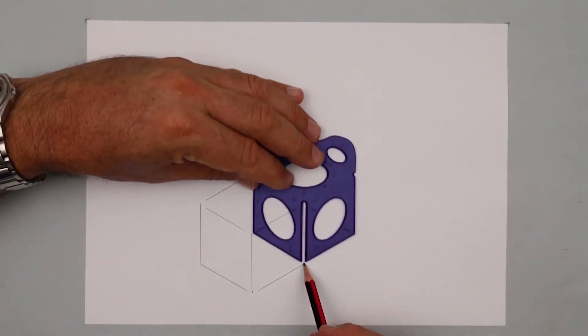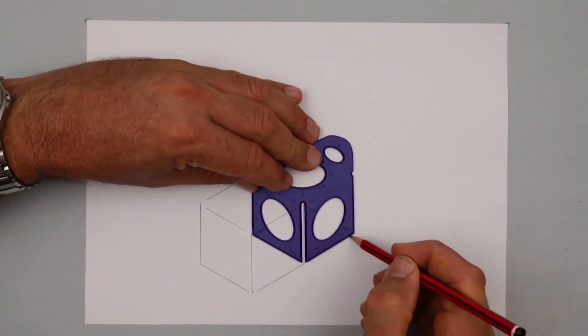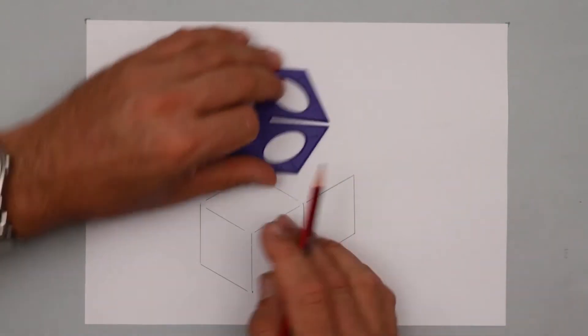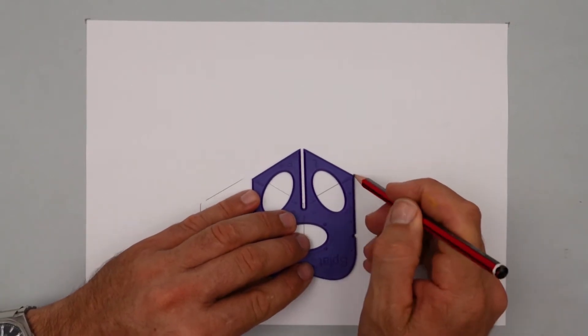For the second cube, there's my new starting point. So I'm going to repeat the process but I've got less lines to draw in. Just one there and complete the cube at the back.